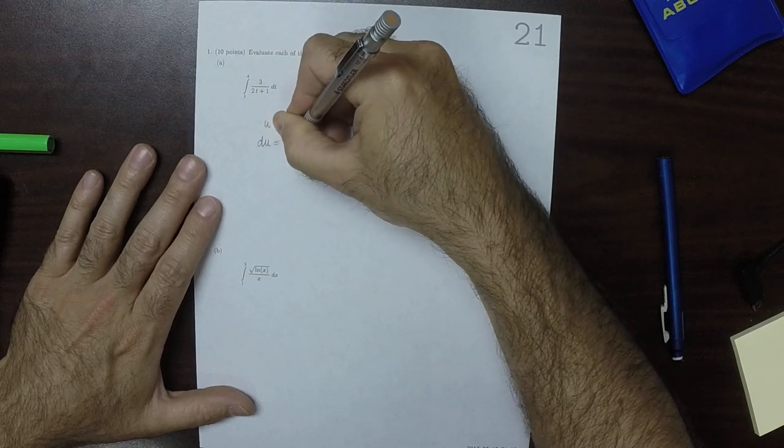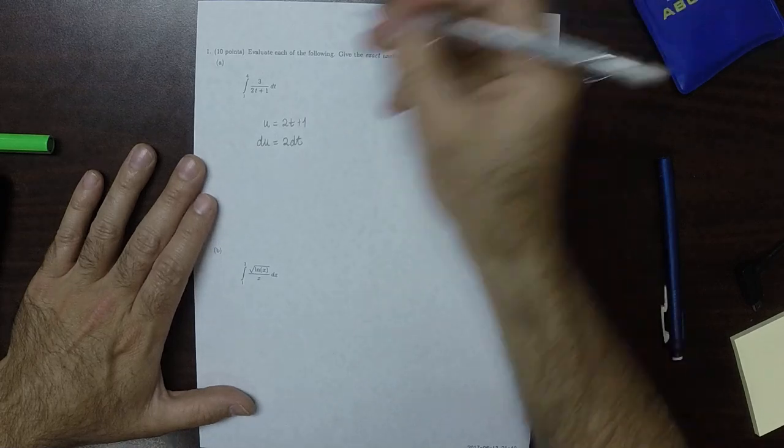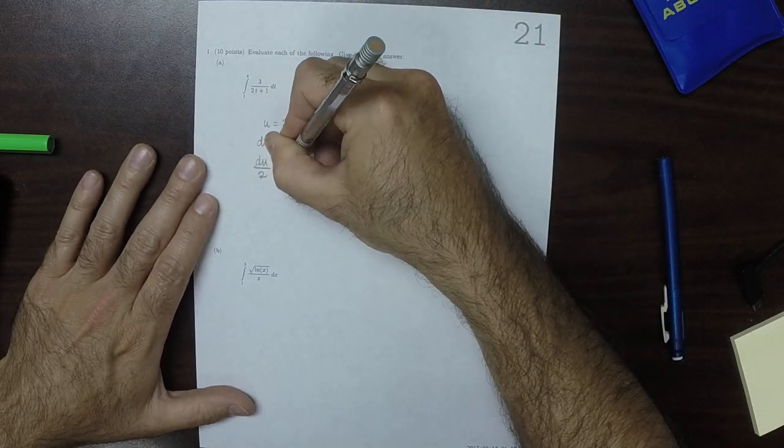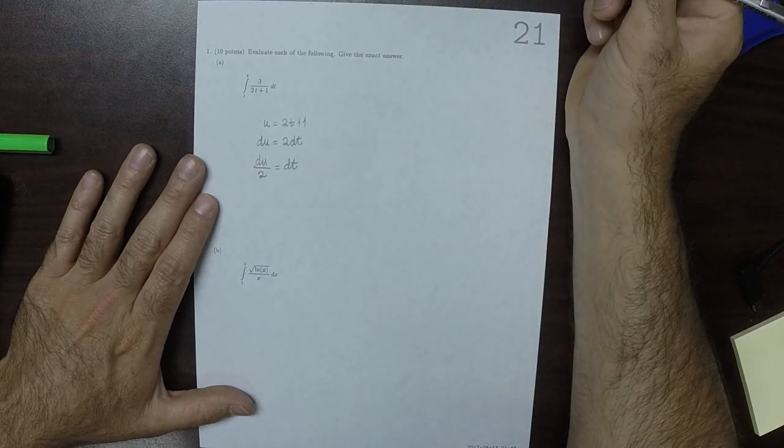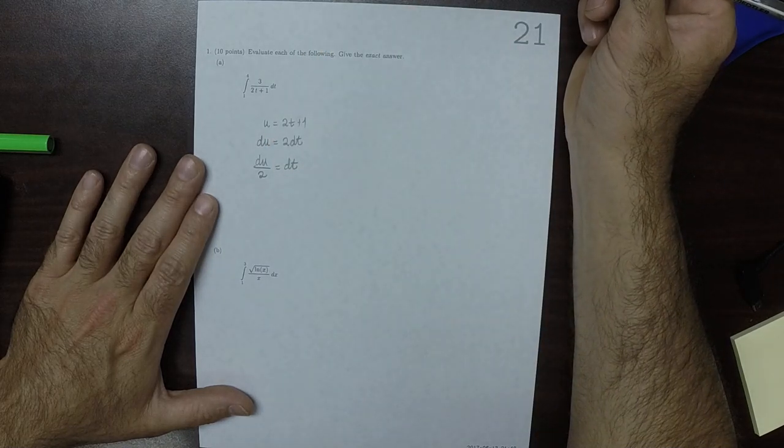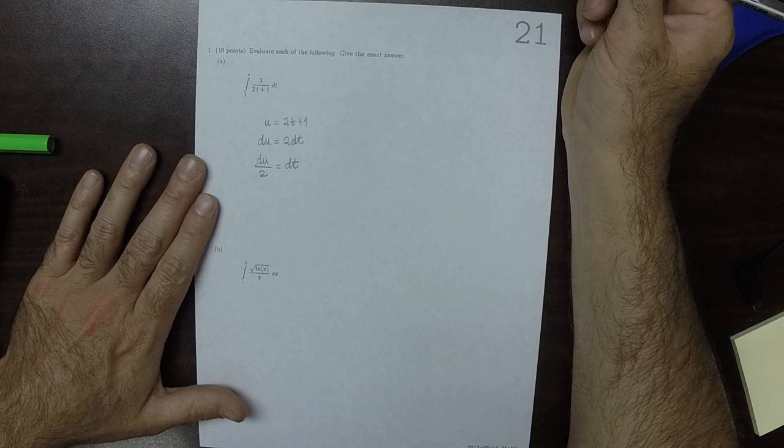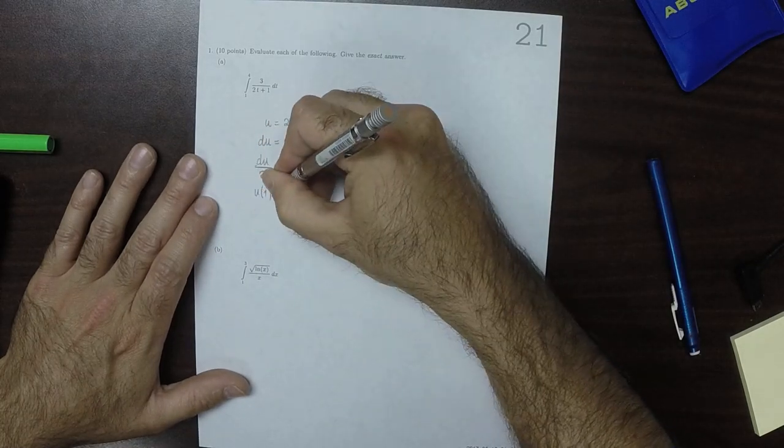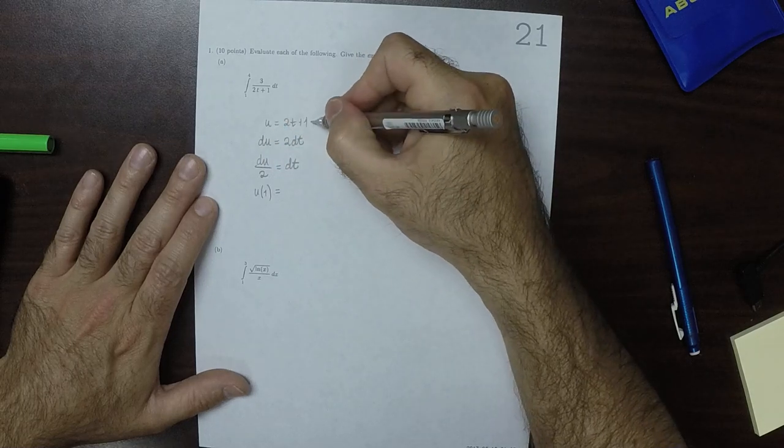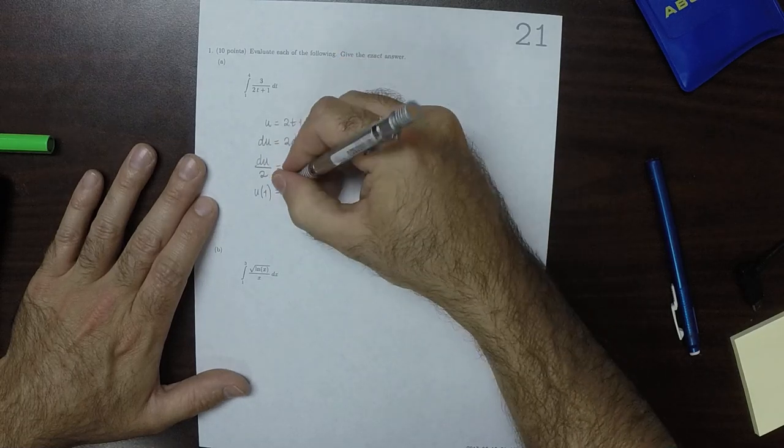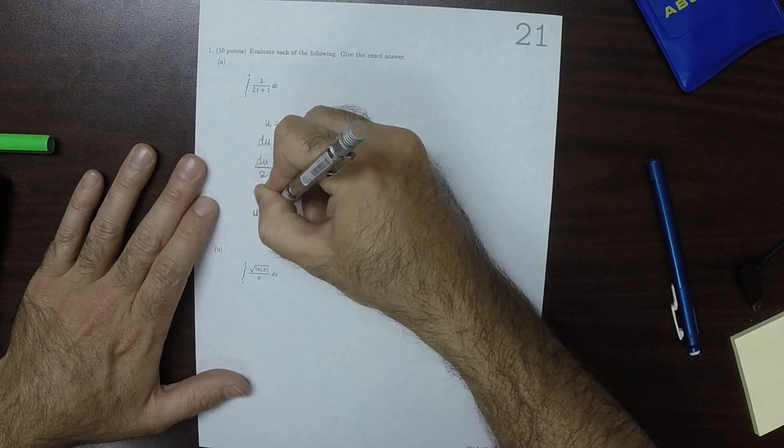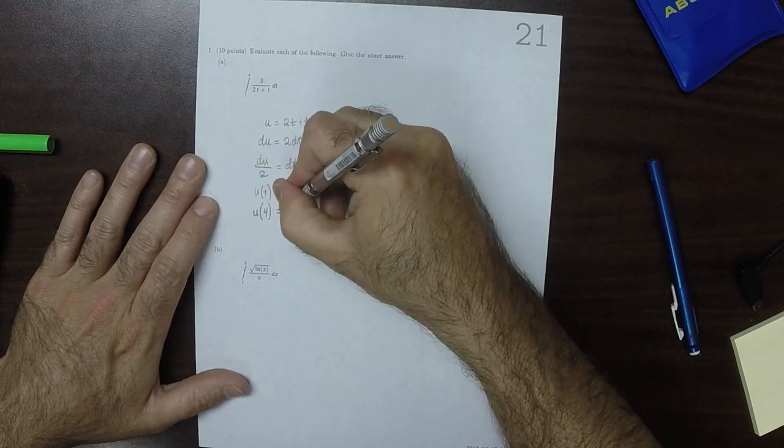So du is 2 dt. So du over 2 is dt. And then u, when evaluated at 1, is plug-in 1, you get 3. And u, evaluated at 4, plug-in 4, you get 9.